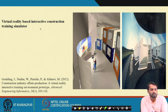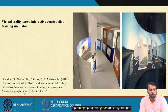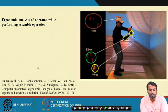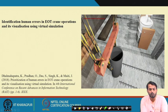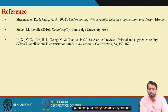Another example is the virtual reality-based interactive construction training simulator, published in the Journal of Advanced Engineering Informatics in 2012, where newly joined construction workers are trained to interact with different equipment on construction sites and react to hazardous situations. Ergonomic analysis of operators during assembly operations can also be performed using VR. Finally, identification of human error in EOT crane operation and visualization using virtual simulation was published by K. Dhal Mahapatra and J. Maithi at a conference on Recent Advances in Information Technology in 2018.